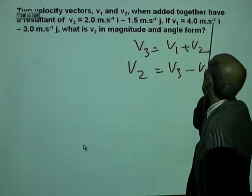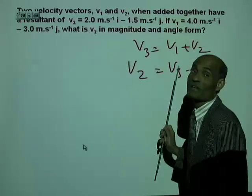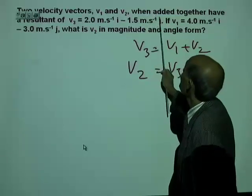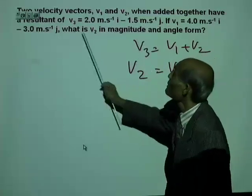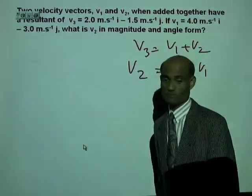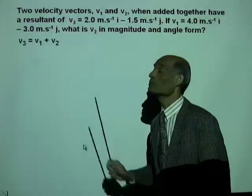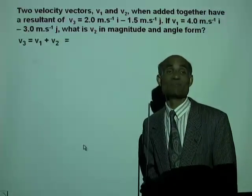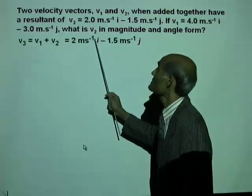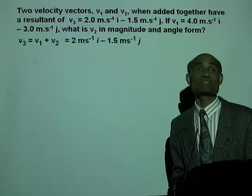Subtract the x-component of V1 to get the x-component of V2. The y-component of V2 will be the y-component of V3 minus the y-component of V1. Now, V3 equals V1 plus V2, where V3 is 2 m/s i minus 1.5 m/s j.